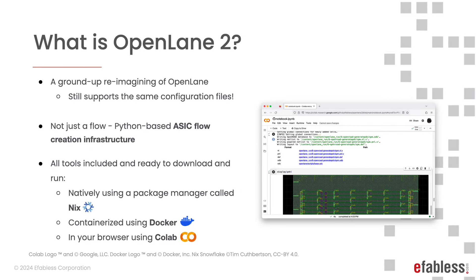Now the question would be: what is OpenLane 2? Well, OpenLane 2 reimagines OpenLane not just as a single flow, but as an infrastructure with which many flows can be created. Yet it still supports the same simple configuration of OpenLane 1 by implementing a default flow named Classic which emulates OpenLane 1 and does way more. It still supports both SKY-130 and GF-180 MCU PDKs, and bundles all of its dependencies — either natively, using a package manager named Nix, containerized using Docker, or even in your web browser using Google Colaboratory.